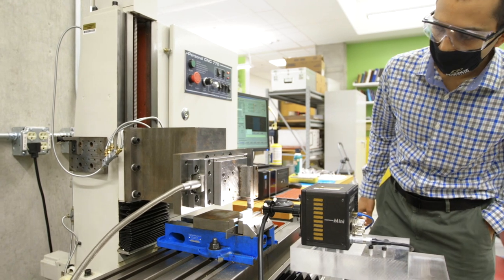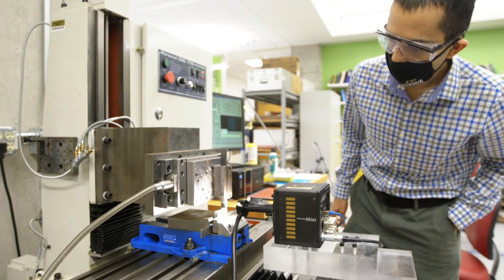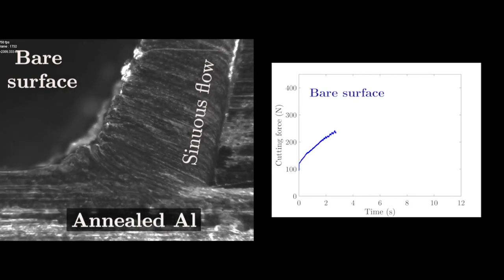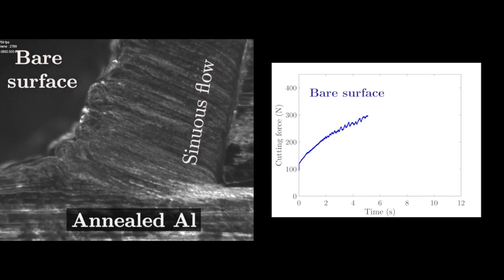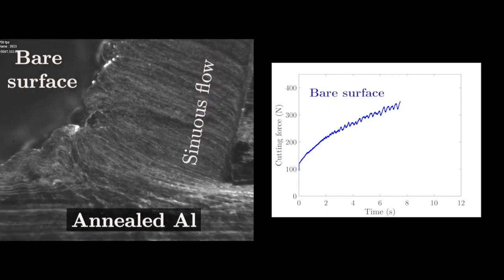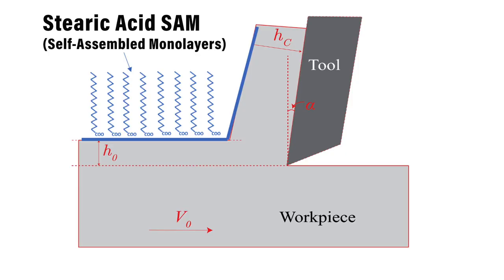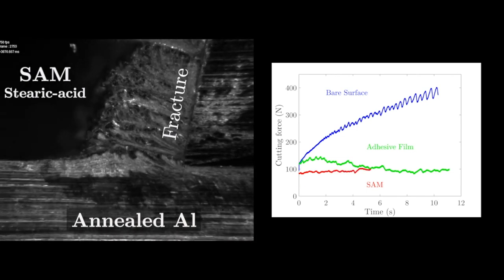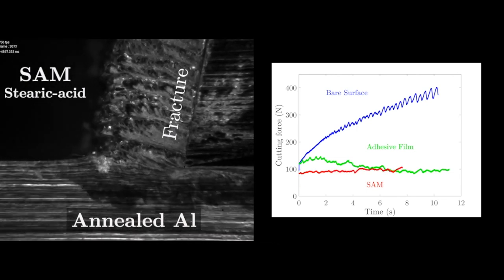The high speed camera shows how the mechanics of metal deformation is changing. Without the monolayer, the deformation is highly sinuous and the metal is very ductile. But with the long chain monolayer, the metal is embrittled. You have periodic fractures coming from the surface. That makes it very easy to cut.